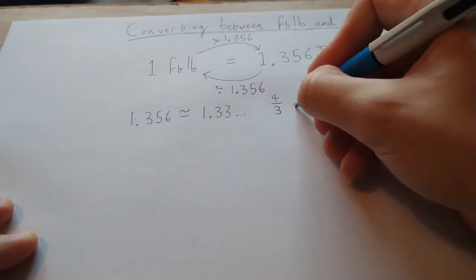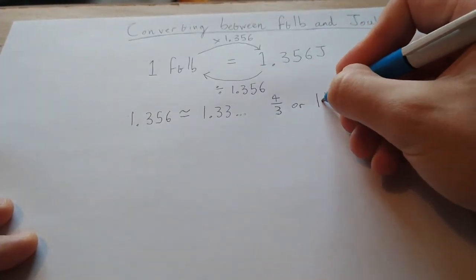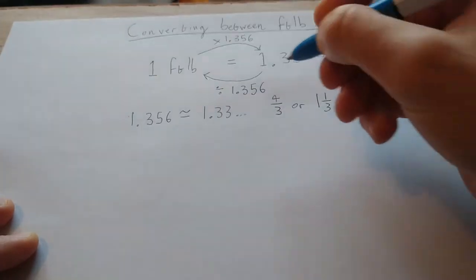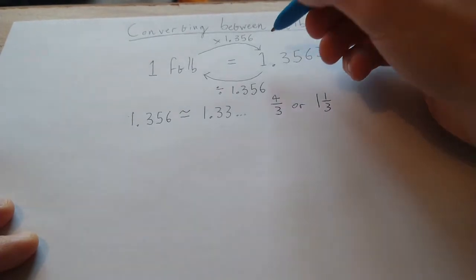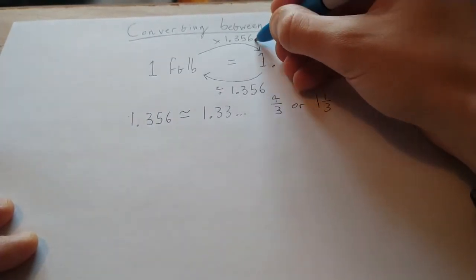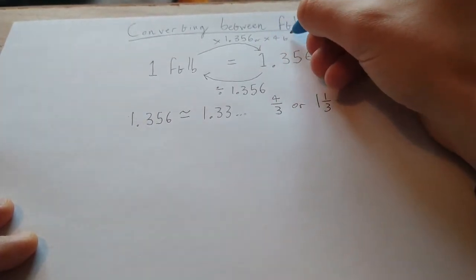Or if you're not comfortable with top-heavy fractions, 1 and 1 third. And what this means is that to get from foot pounds to joules you can actually multiply by 4 and then divide by 3.